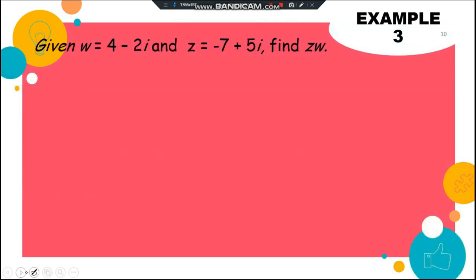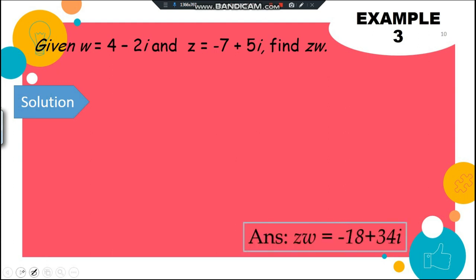Next question: we have w minus 2i and z equals negative 7 plus 5i. Find zw. Finding zw means you just multiply them together. I've attached the final answer, but I want you to do this by yourself.